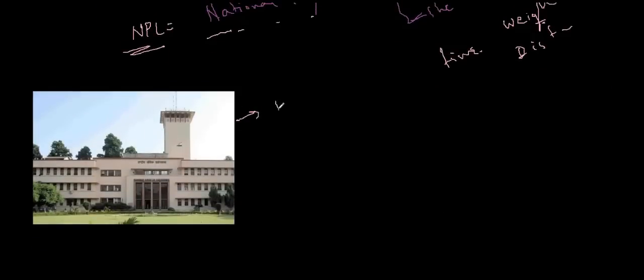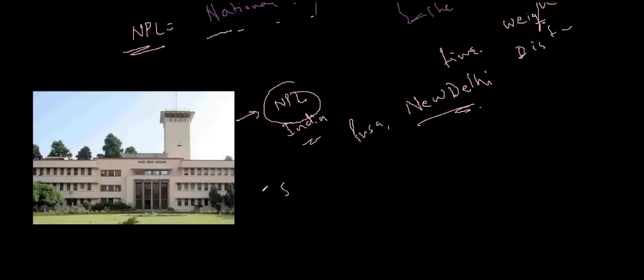This is the NPL of India, it's situated in Pusa, New Delhi, it's a famous place, especially for the agricultural purposes also. So this NPL, it is this building which maintains all those measurements, and especially in case of time, we have a very sophisticated machine, it's called as the Caesium, C-A-E-S-I-U-M, Caesium Atomic Clock, we have a Caesium Atomic Clock, it's a very sophisticated machine that we have, and it maintains the time.